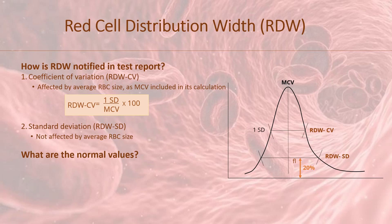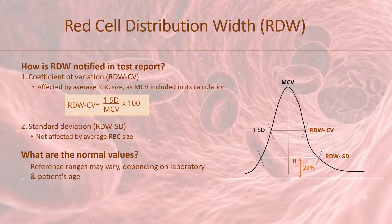Now coming to what are the reference values. Reference ranges of RDW may vary depending on the individual laboratory and patient's age. RDW-SD reference range is from 39 to 46 femto-liters, and RDW-CV normal range is 11.6 to 14.6% in adults.